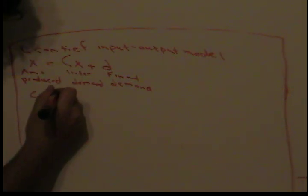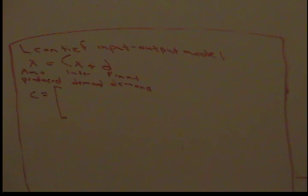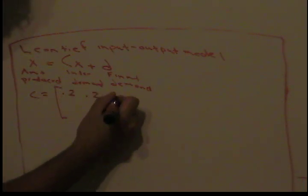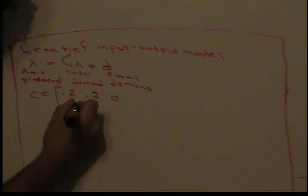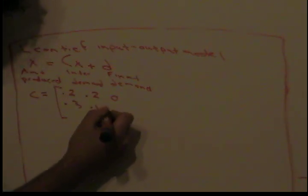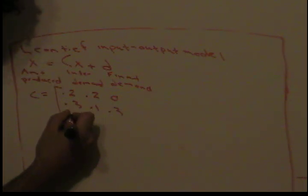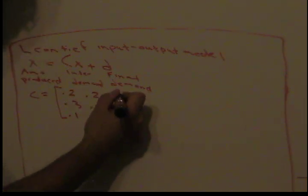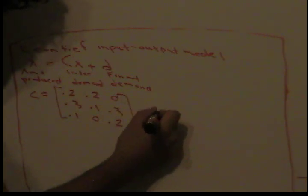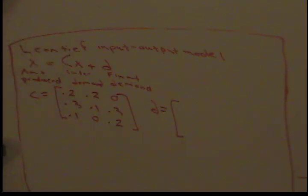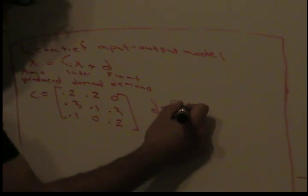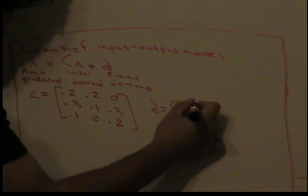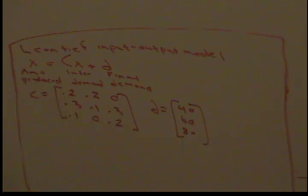In this example, our consumption matrix C is: [0.2, 0.2, 0; 0.3, 0.1, 0.3; 0.1, 0, 0.2], and our final demand D is the vector [40, 60, 80]. We're trying to solve for the amount produced x given this consumption matrix and final demand.